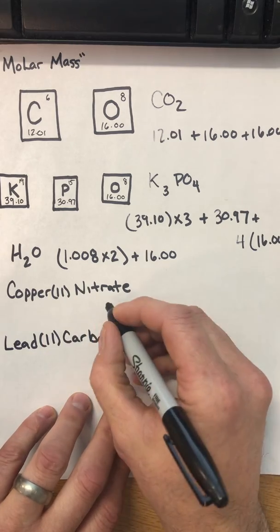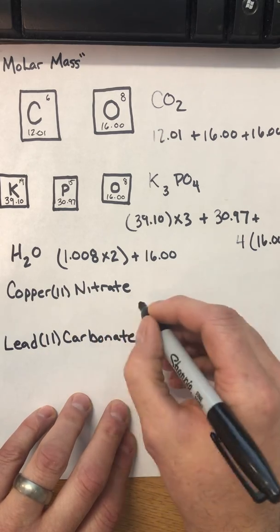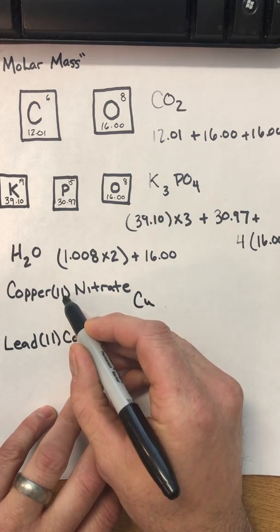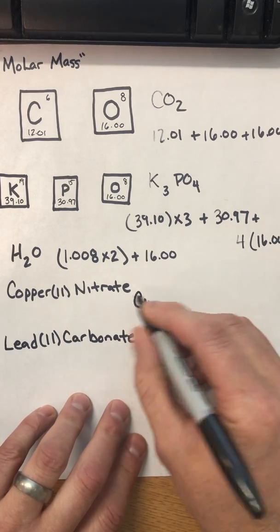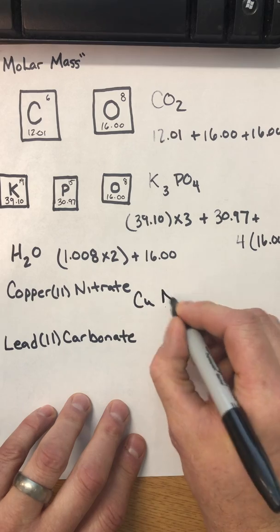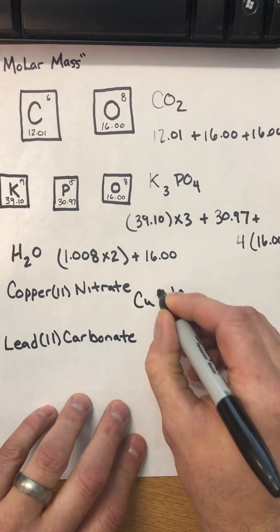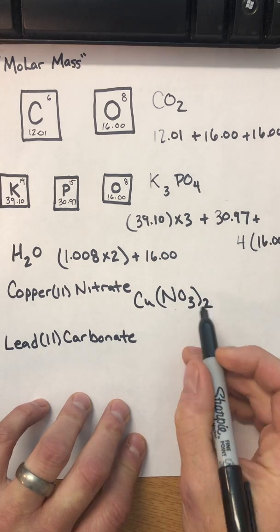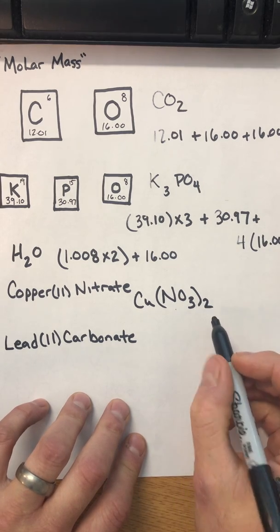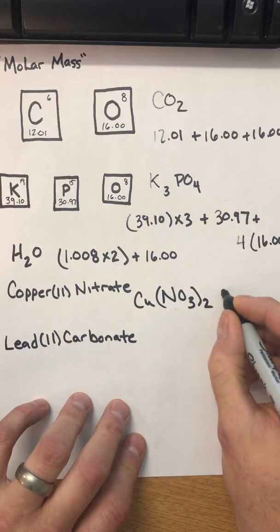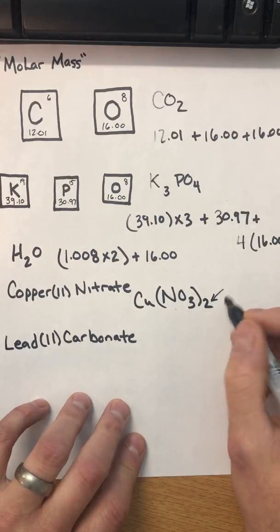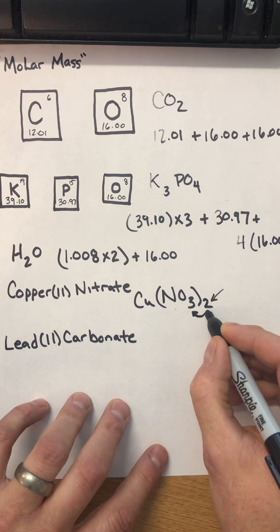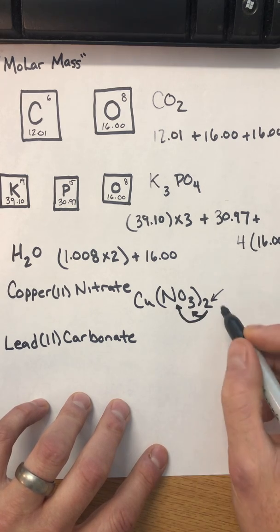So we would just turn this into a formula. Here we have Cu with its oxidation state of positive two, which is going to end up being the subscript for our nitrate ion, which we'll put in parentheses with a two. Now here is where you have to remember that the outside subscript, if you have a subscript that's outside the parentheses, that is going to distribute by multiplication to all of the subscripts inside the parentheses, right?